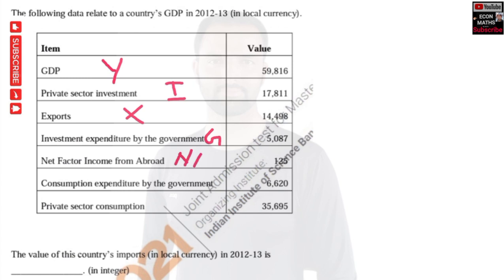Net factor income from abroad is 125. Consumption expenditure by the government is given as 6,620 — this is also part of our G. And private sector consumption, which is the household sector consumption, is given by C.